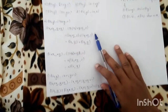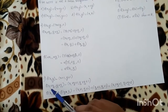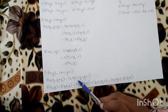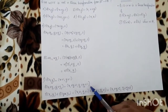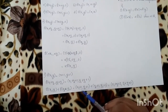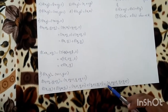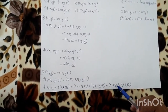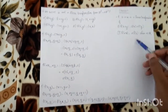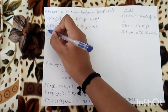Now checking option C: f(x,y) = (x+1, y+1). We test additivity: f(x1+x2, y1+y2) = (x1+x2+1, y1+y2+1), but f(x1,y1)+f(x2,y2) = (x1+1, y1+1)+(x2+1, y2+1) = (x1+x2+2, y1+y2+2). These are not equal, so the first condition is violated. Therefore option C is NOT a linear transformation.